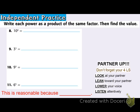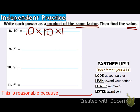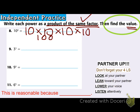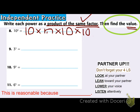Still in independent practice — now I'm going to write each power as a product of the same factor and find the value. They're asking for two things: write them as the same factor and find the value. The base is 10, and the exponent is 4, so I need to write 10 four times: 10 times 10 times 10 times 10 — that's the product of the same factor. Now I find the value: 10 times 10 is 100, 100 times 10 is 1,000, and 1,000 times 10 is 10,000. So that equals 10,000.